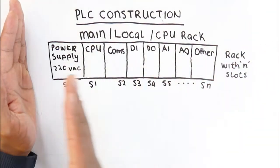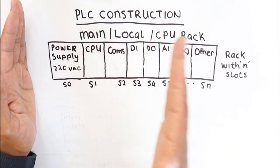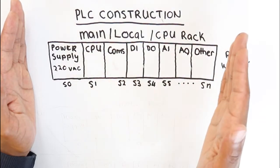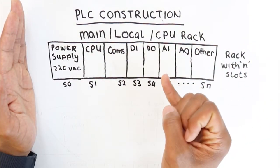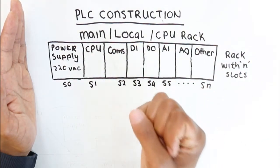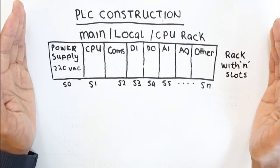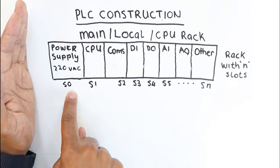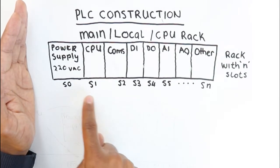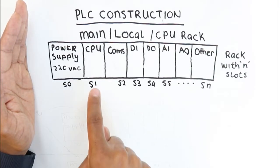The rack of your PLC will consist of a certain number of slots. The number of slots that you'd have in a rack can be dependent on the manufacturer as well as the size of the racks that the manufacturer supplies for their particular PLC. Each slot on the rack will usually be labeled: you'll have your slot 0, slot 1, slot 2, slot 3, slot 4.